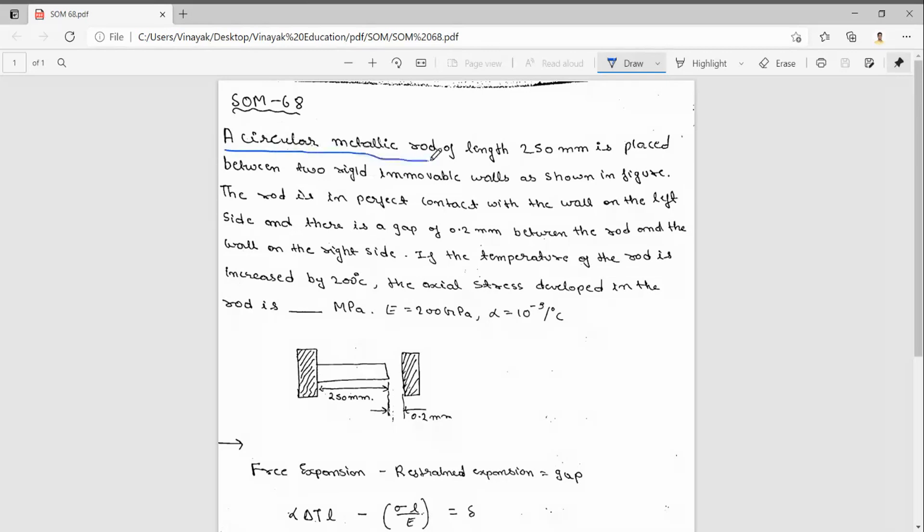A circular metallic rod of length 250 mm is placed between two rigid immovable walls as shown in the figure. These are two walls, and in between this 250 mm, one rod is kept. The rod is in perfect contact with the wall on the left side, and there is a gap of 0.2 mm on the right side.